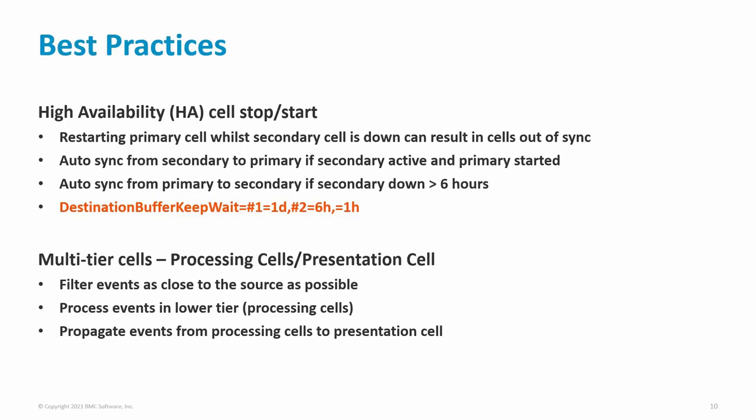If the secondary is active due to the primary being down and then the primary is started, the default behavior is that auto sync will occur. The secondary forces an execution of StateBuilder to create a new MCDB file, which is transmitted to the primary; the primary reads it into memory and becomes active. With version 11303, a change was introduced whereby if the secondary is down for more than six hours — the default value of parameter destination_buffer_keep_weight — the primary will create a new MCDB file and transfer it to the secondary to ensure cells are in sync. The value for destination_buffer_keep_weight can be reduced; for example, changing it from 6H to 1H means auto sync will occur if the secondary is down for more than one hour.